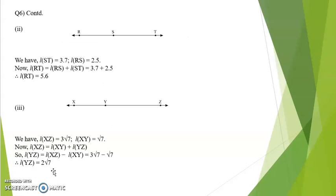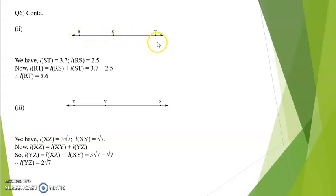Next, length ST is given as 3.7 and length RS as 2.5. We have to find RT. RT is the total of both, so RT is equal to RS plus ST, which is 3.7 plus 2.5. The answer is 5.6.